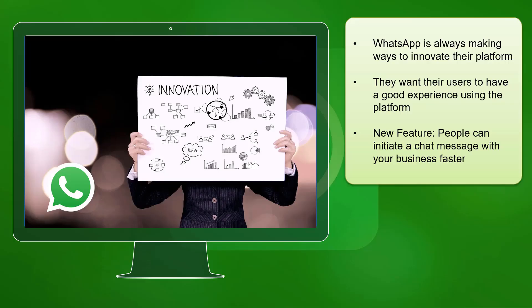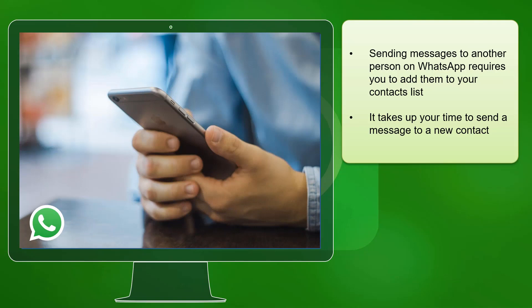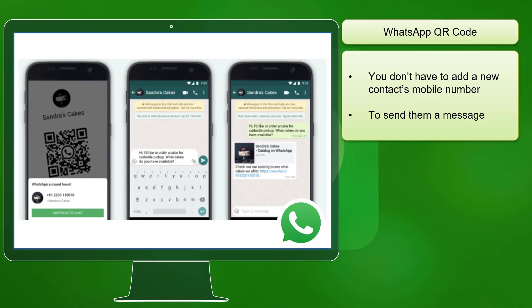WhatsApp is always making ways to make it easier for its users to use their platform. WhatsApp introduced a new feature that makes it possible for people to add their business to WhatsApp faster. We all know that you can only send a message to a person on WhatsApp if you added them to your address book or your contacts list. Doing this will take a few minutes of your time just to put every digit of the contact's mobile number, creating an annoying extra step just to send a message to another person.